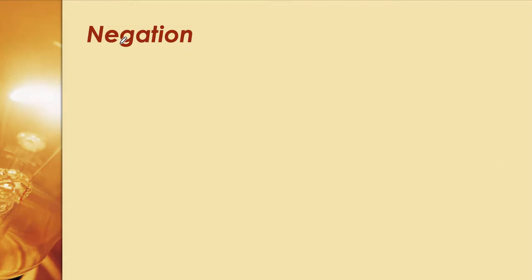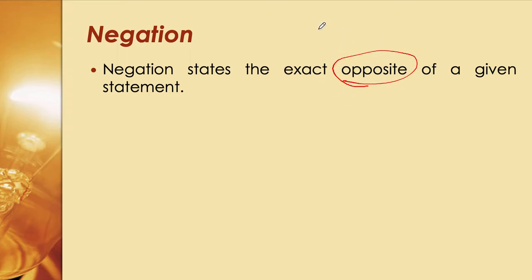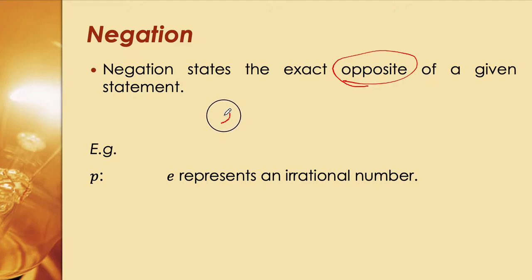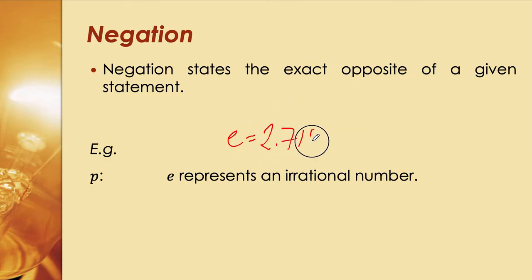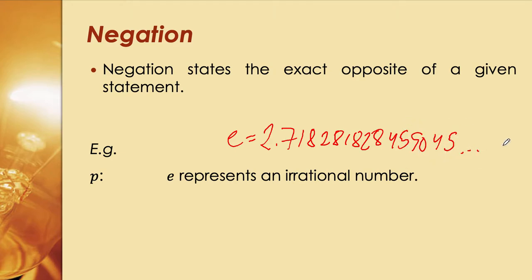Negation states the exact opposite of a given statement. If a statement is true, its negation is false; if it is false, its negation is true. For example, p states that e is an irrational number — Euler's number, approximately 2.71828, which is an irrational constant similar to pi. You can look at my video on Euler's number for more detail.